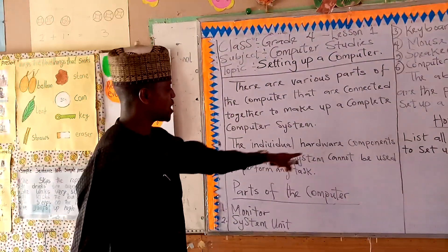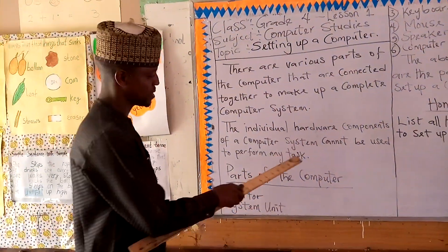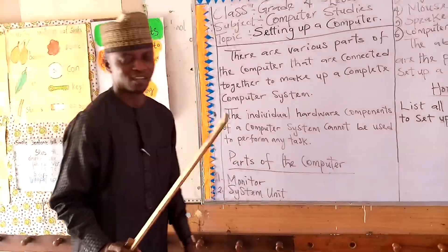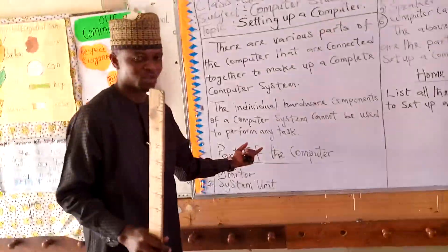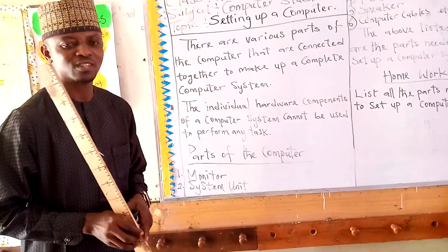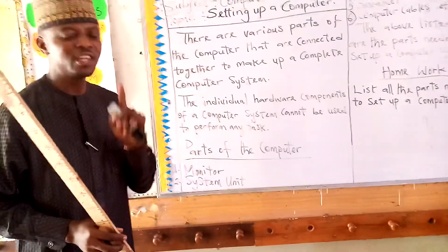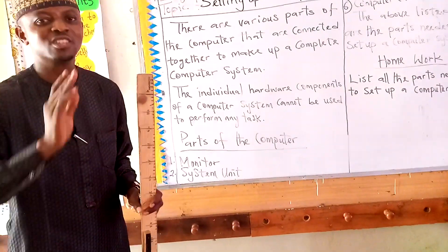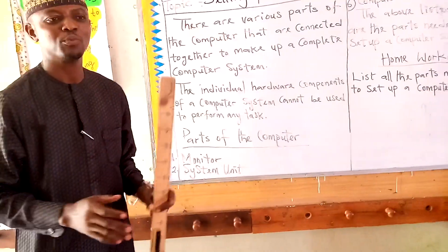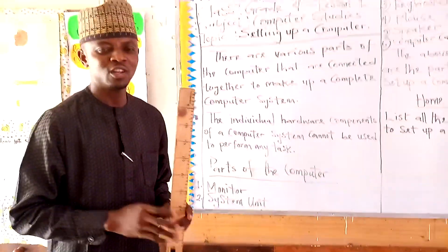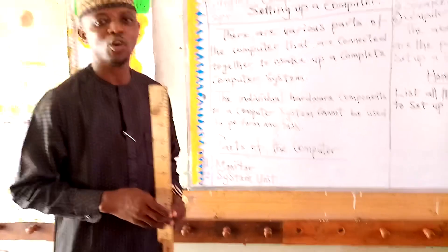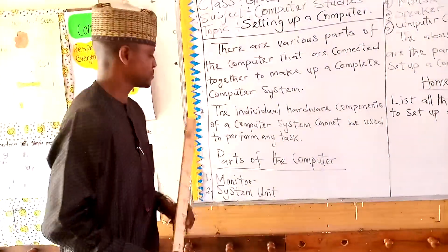The individual hardware components of a computer system cannot be used to perform any task on their own. Each part cannot be used standalone — they all need to be connected together to make a complete computer system.